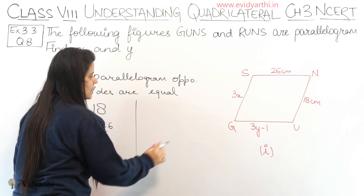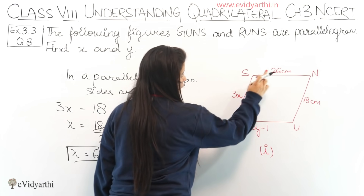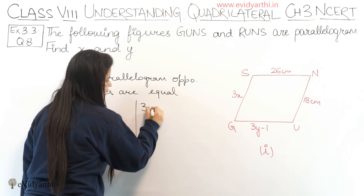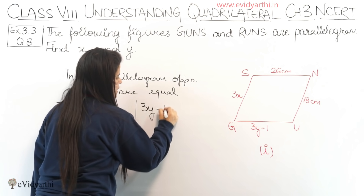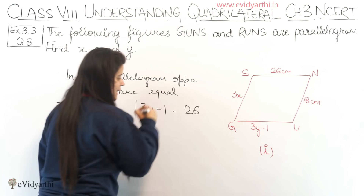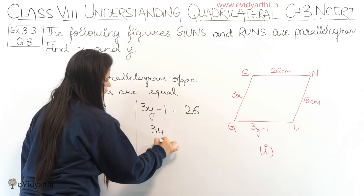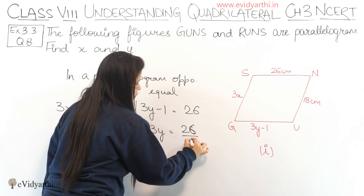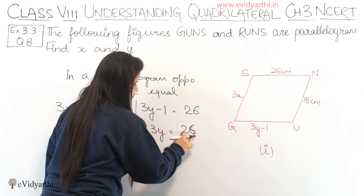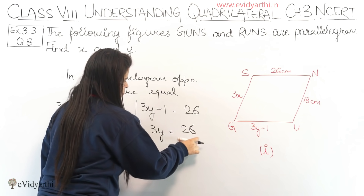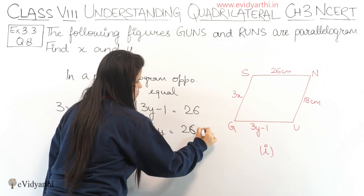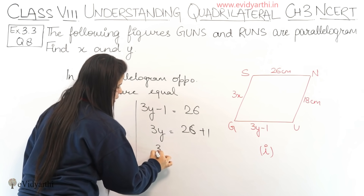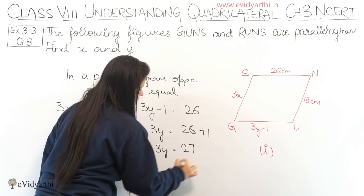Similarly, 3Y minus 1 and 26 will be equal as opposite sides. So we write 3Y minus 1 equals 26. Therefore 3Y equals 26 plus 1, because the minus 1 moves to the other side and becomes plus. So 3Y equals 27.